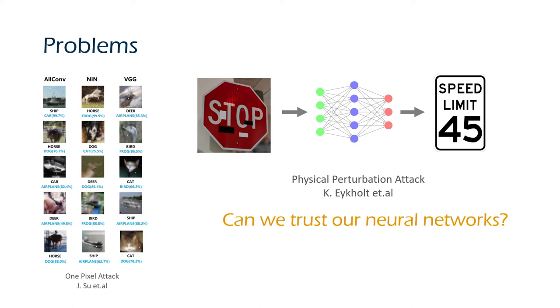Also, some works attack the neural network in the real world. With perturbations composed of black and white stickers, it successfully forces the neural network to classify the stop sign to a 45 MPH speed limit sign.